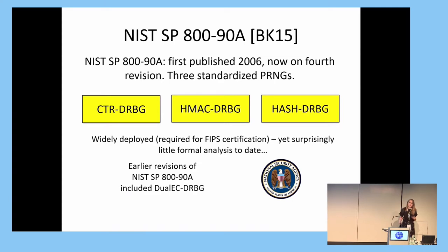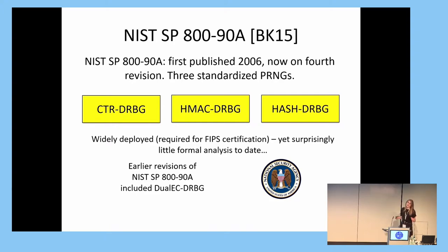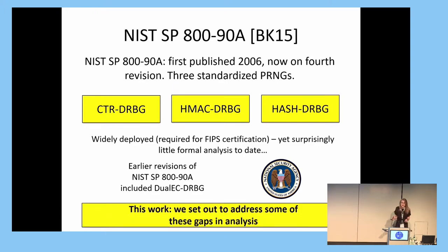One possible explanation for this is that earlier revisions of the standard contained the now infamous Dual EC, which was then removed from later revisions after the Snowden leaks. So it seems plausible that perhaps because of the attention lavished on the Dual EC, the other generators in the standard were somewhat overlooked. So in this work, we set out to address some of these gaps in analysis and to increase our understanding of the security properties of the remaining generators.